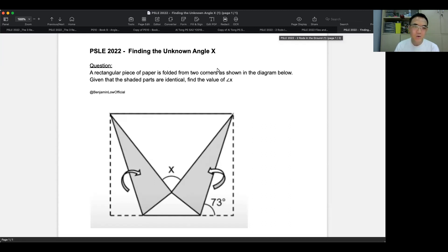Hi, welcome back. So now we are doing the PSLE 2022 finding the unknown angle X question. So how do you find the unknown angle X? There's actually more than one way to do this, and this is my preferred choice.